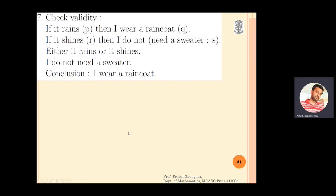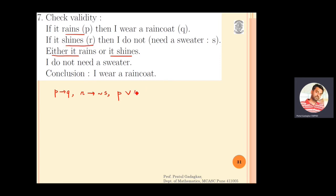Moving to the next problem, we check the validity of a second argument. Let p represent 'it rains,' q represent 'I wear a raincoat,' r represent 'it shines,' and s represent 'I need a sweater.' The first premise is p implies q; the second is r implies negation s; and the third is p or r.